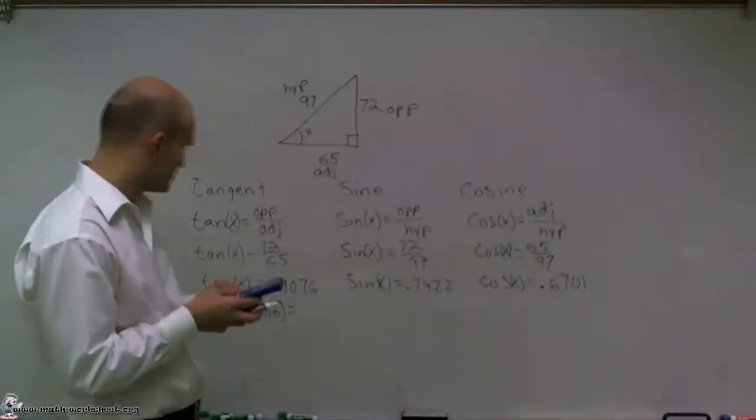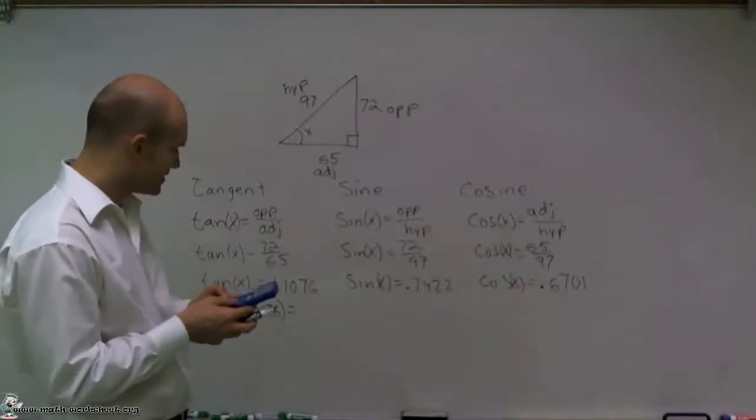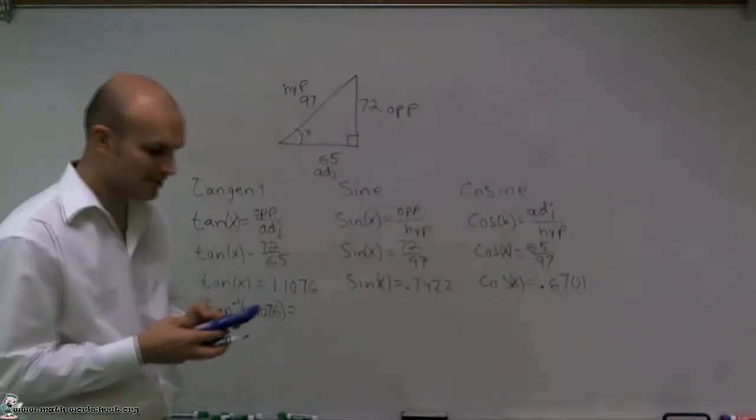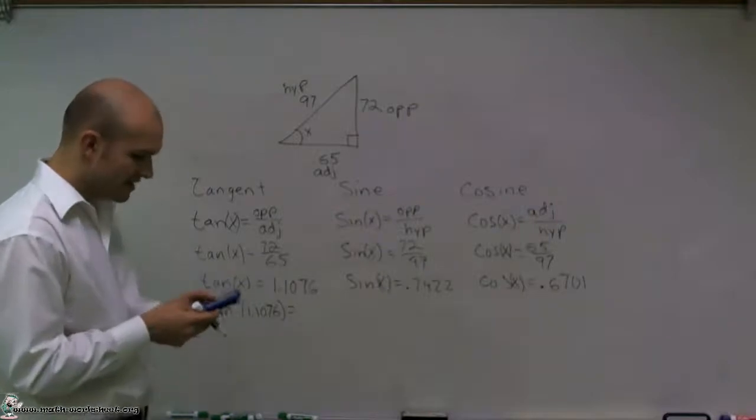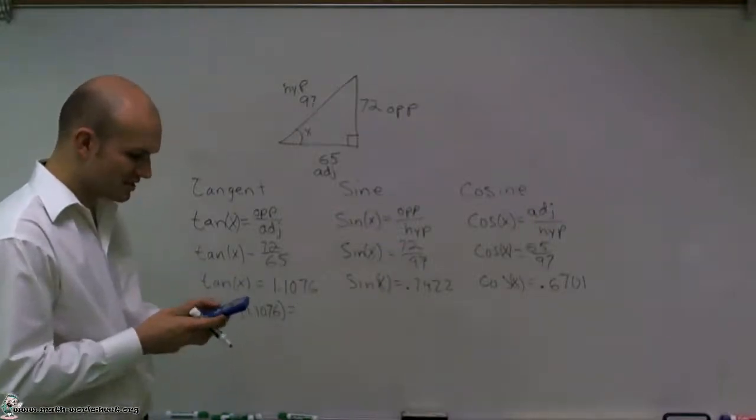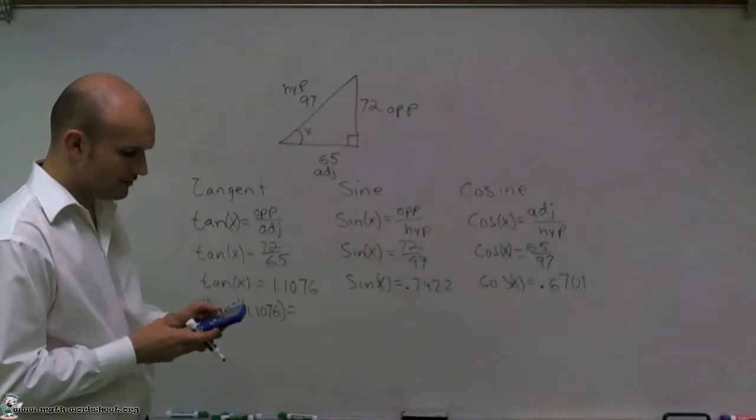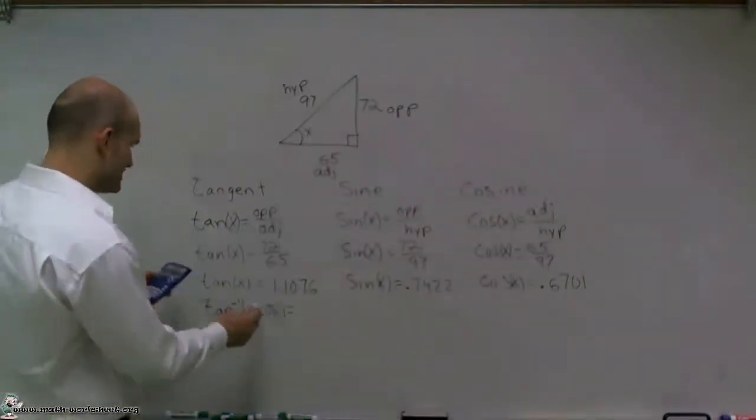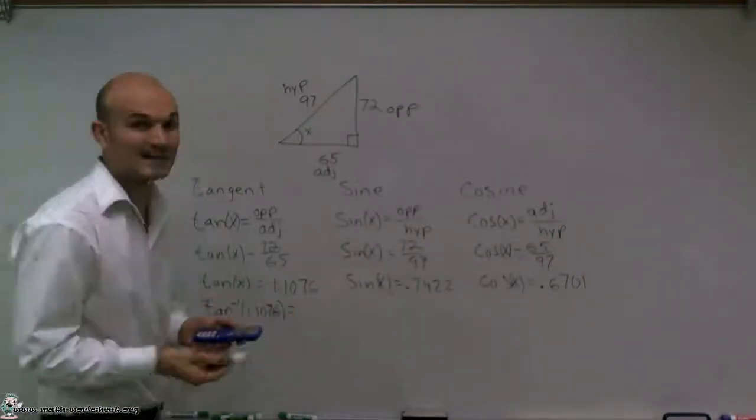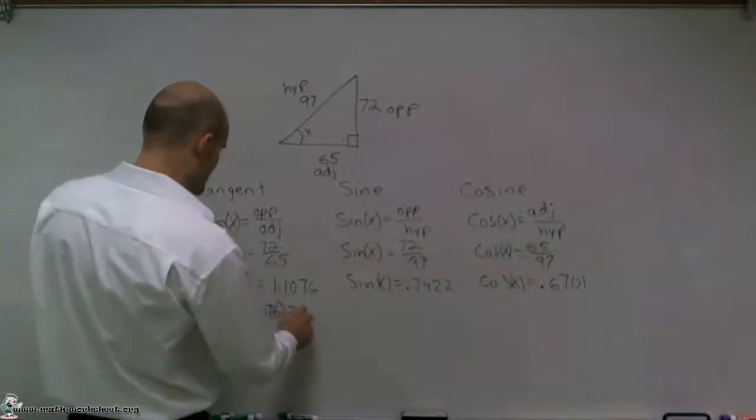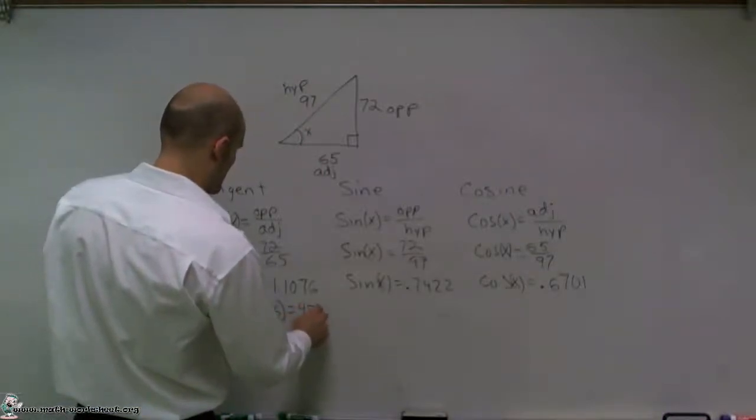I want to make sure that you put them in correctly. I'm going to do 72 divided by 65, and then I'm going to take the inverse tangent of that answer. What I get is 47.9, and I'm going to round that to 48 degrees.